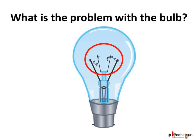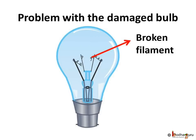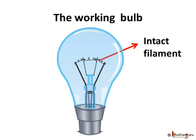The electric bulb is not working. What is wrong with it? Observe it closely. The thin wire inside is broken. We already know this thin wire gives off light — it is called the filament of the bulb. Now, if we look at the bulb which is working properly, the filament is not broken. So, for the proper functioning of the bulb, the filament should be intact.